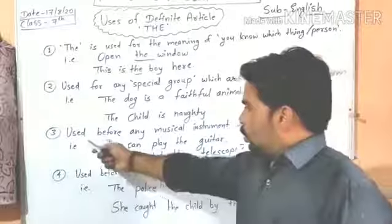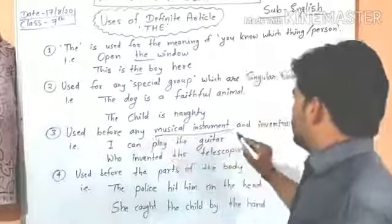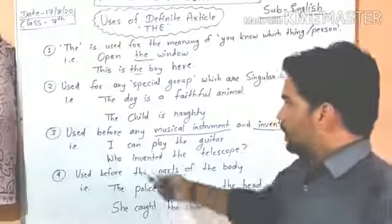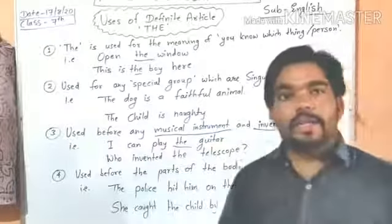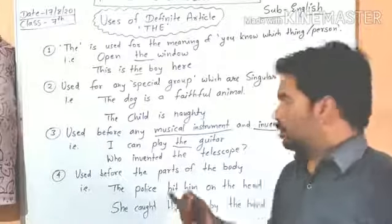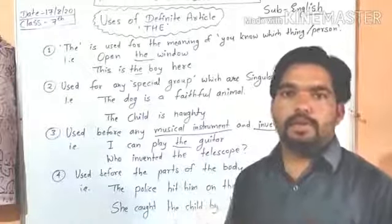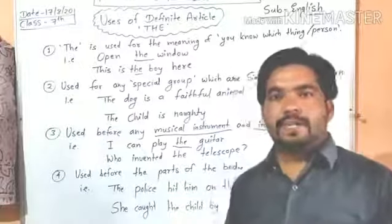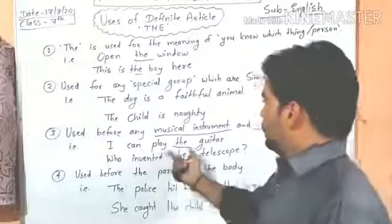The third use: 'the' is used before any musical instrument and invention. For example: 'I can play the guitar,' 'I can play the harmonium,' 'I can play the piano,' 'the drum,' 'the congo.' So 'the' is used before the name of any musical instrument.